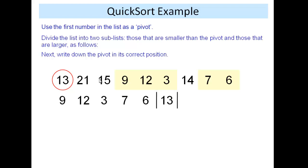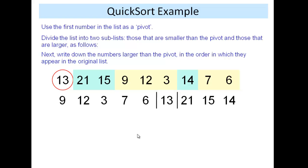We then go through the list again, and we write the numbers that are bigger than the pivot, 21, 15 and 14 to the right. That's the end of the first pass of quicksort.